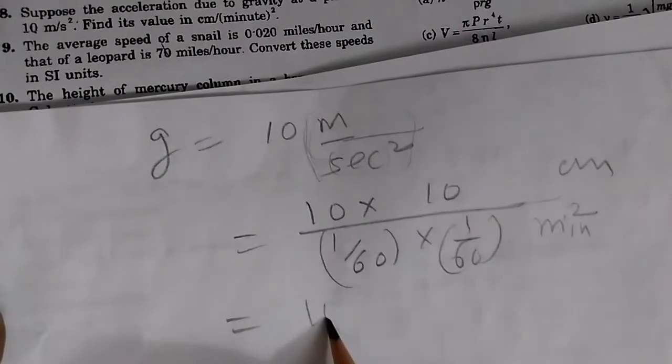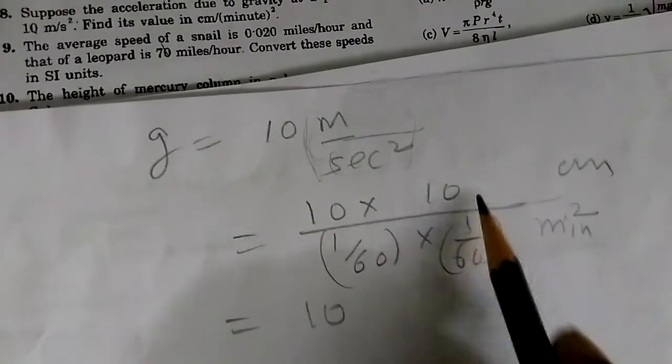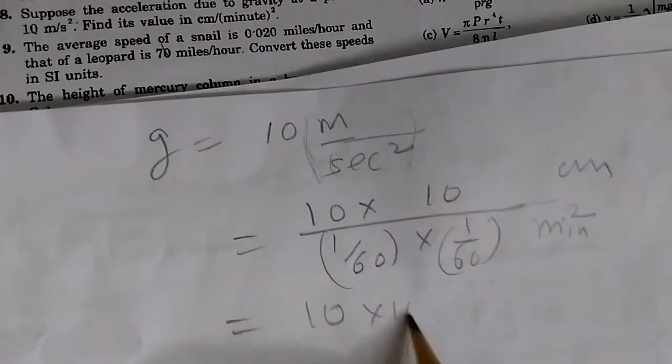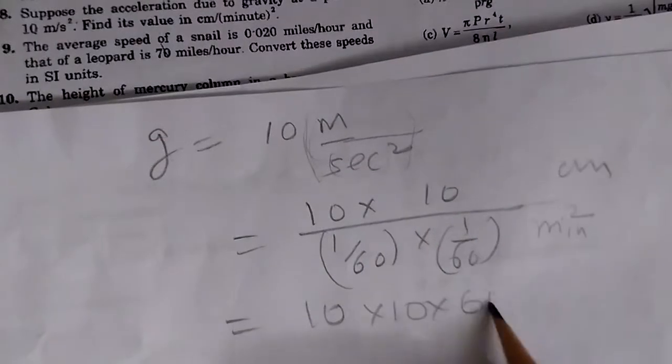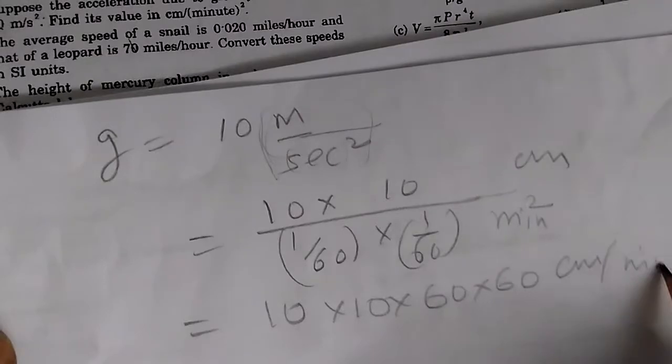And we can write this 10 - 10 into 10, 10 into 10 into 60 goes up, becomes 60 into 60, this much of centimeter per minute square.